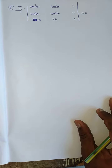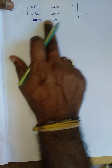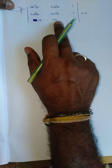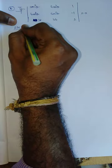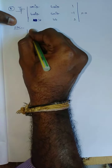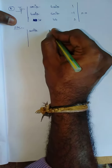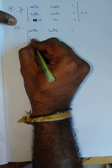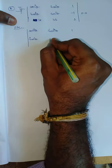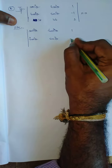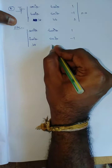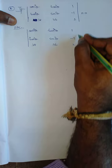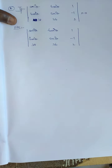We need to prove that the determinant with entries involving sec²θ and tan²θ — specifically with rows containing sec²θ, tan²θ, 1; tan²θ; and values 38, 36, 2 — equals zero. Taking the LHS, which is the determinant itself: sec²θ, tan²θ, 1; tan²θ, sec²θ minus 1; 38, 36, 2.